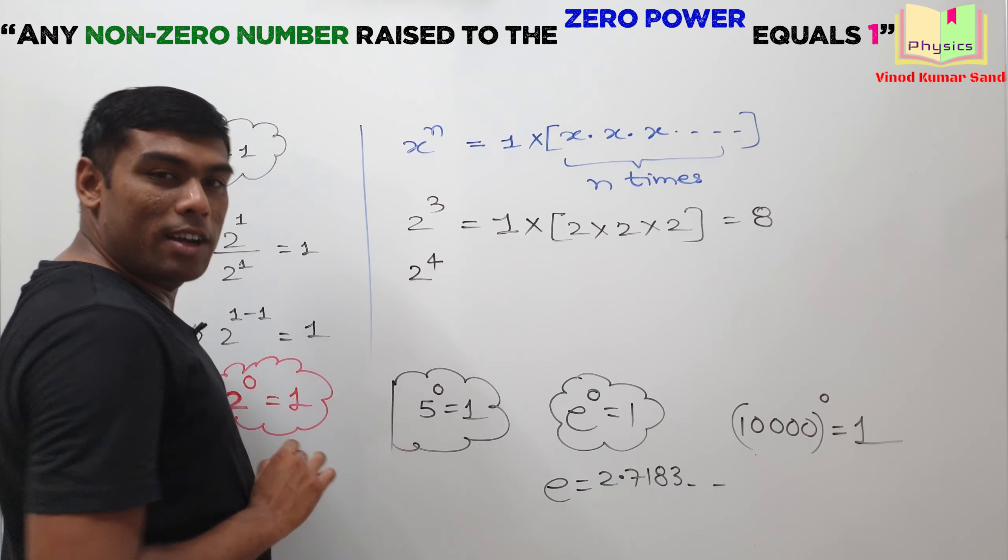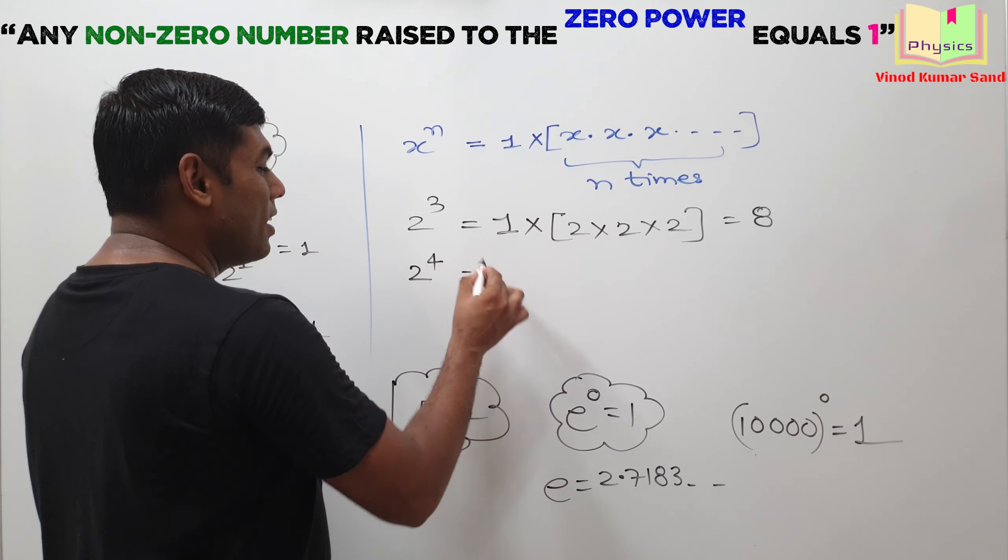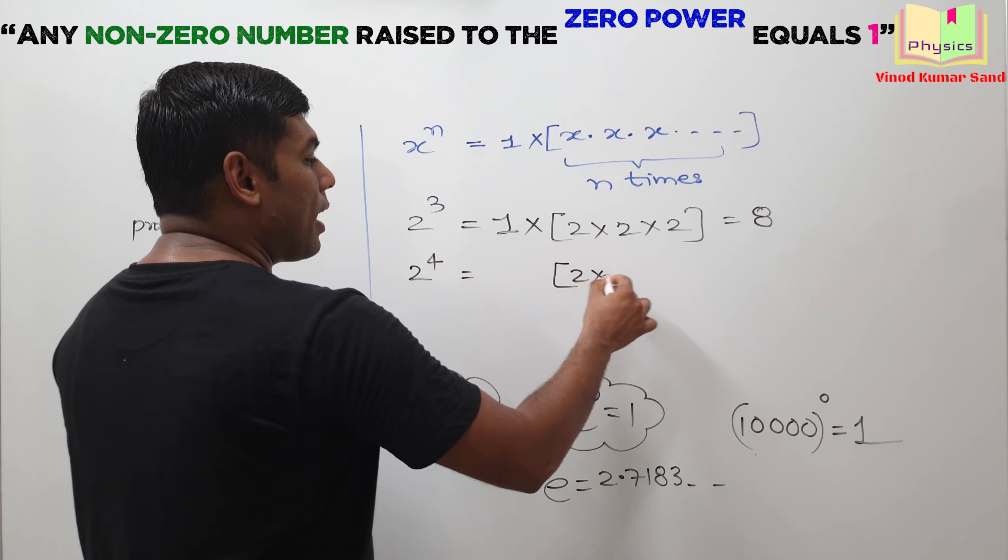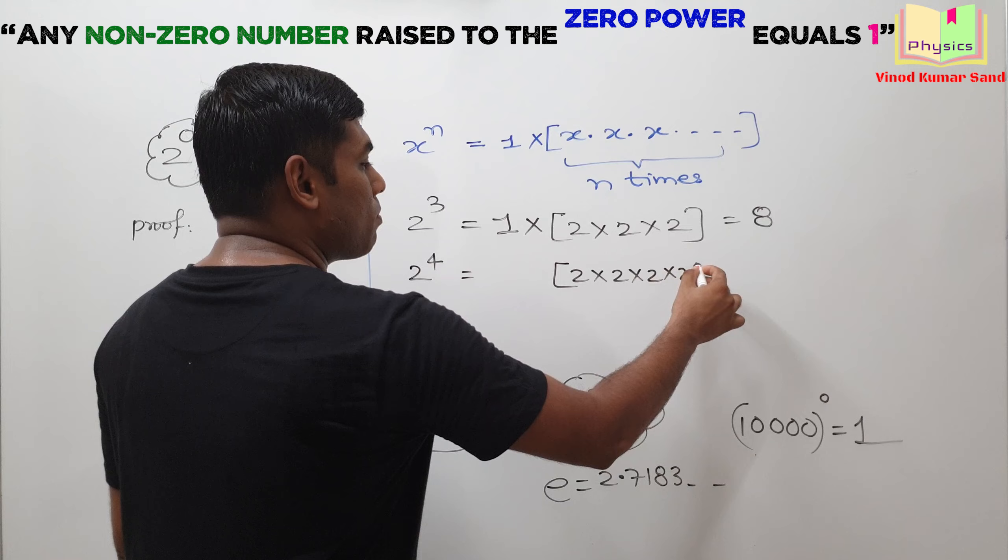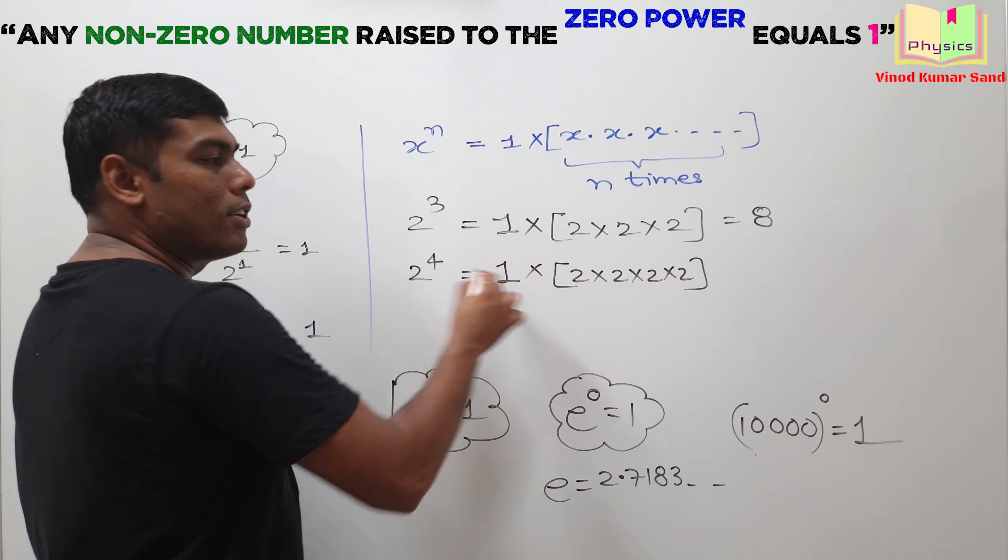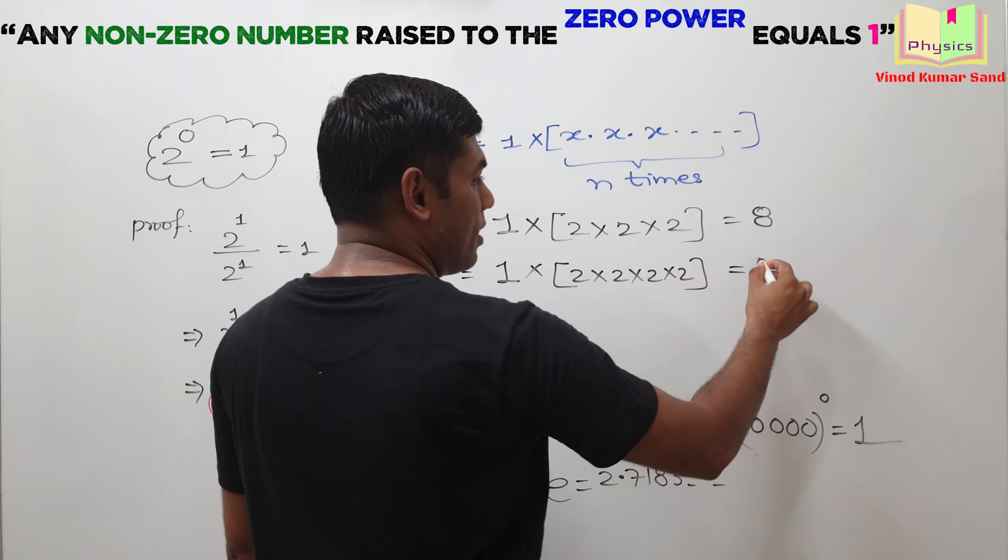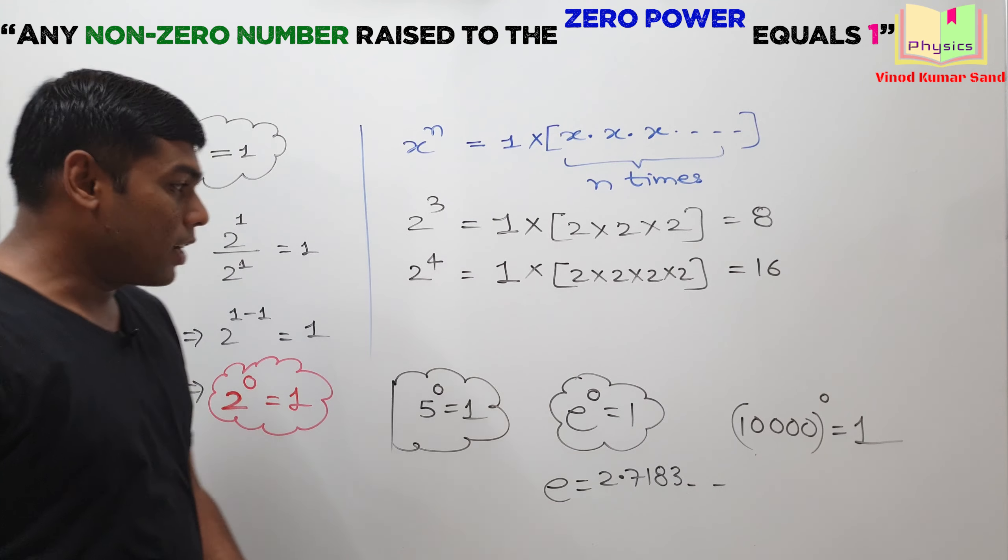Suppose somewhere there is 2 to power 4. What does it mean? 2 is multiplied 4 times with 1. Answer will be 16.